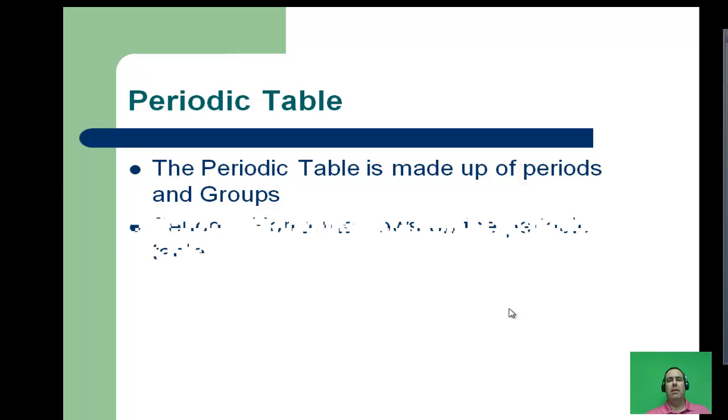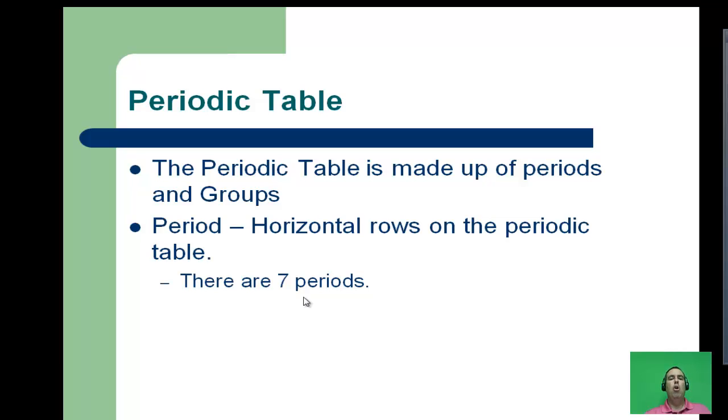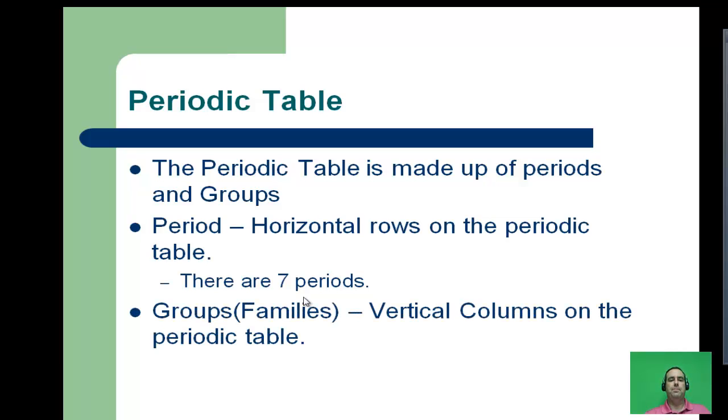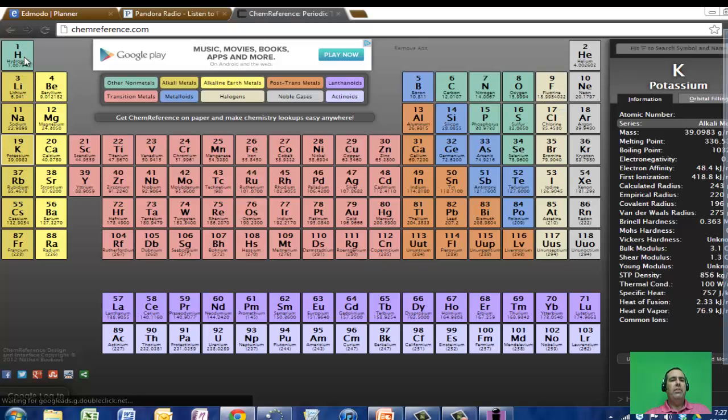Just a couple of things on the periodic table. The periodic table is made up of horizontal rows called periods. When you look at the periodic table, you're going to notice that there are seven horizontal rows going across. Going vertically are groups or families—your vertical columns on the periodic table. There are 18 groups. Here's row number one, row number two, three, four, five, six, and seven. So there are seven periods going horizontally across the periodic table.